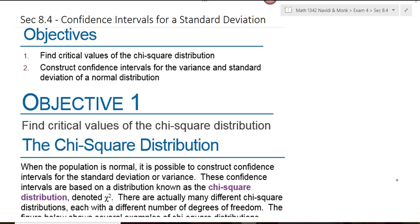Section 8.4 is confidence intervals for a standard deviation. There are two objectives here: first is to find the critical values of a chi-square distribution, and then we're going to construct confidence intervals for the variance and the standard deviation.